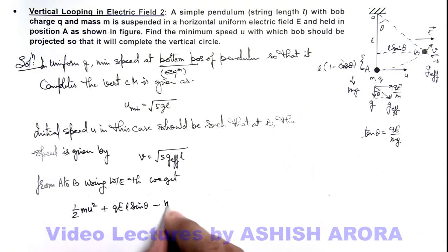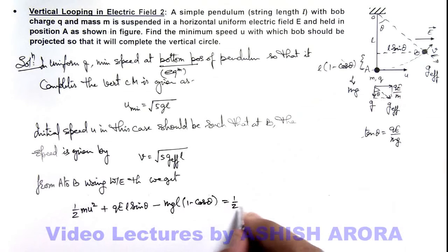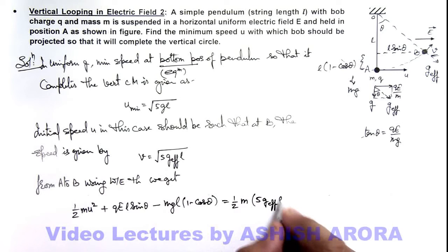Minus mgl times 1 minus cos theta is equal to final kinetic energy at point B that is half m v square which I can write as 5 g effective l.